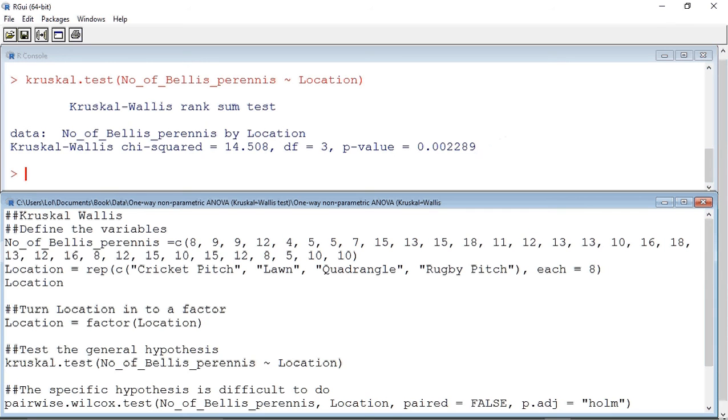However, what it does not tell us is which of the four grass environments are significantly different in their daisy density to each other. To find this out, we have to do a post-hoc test.